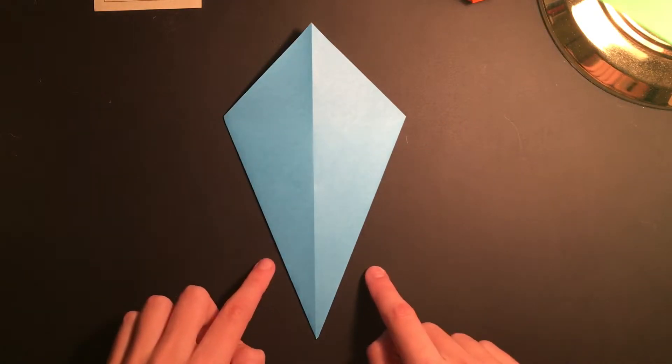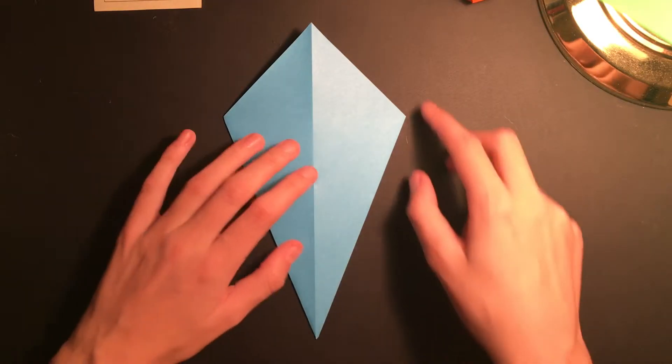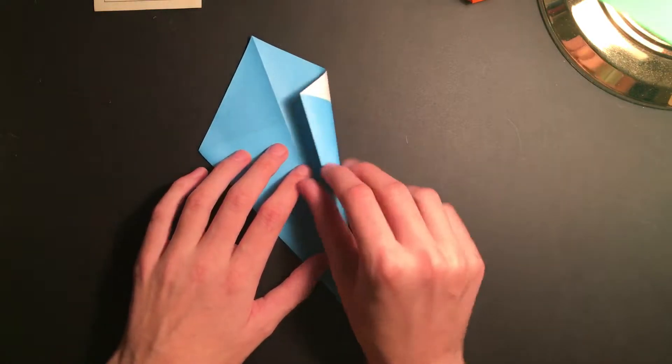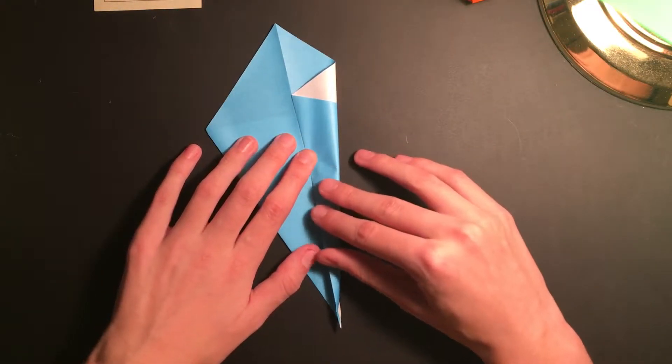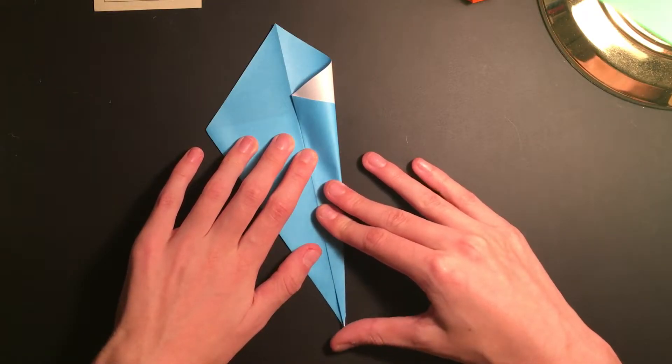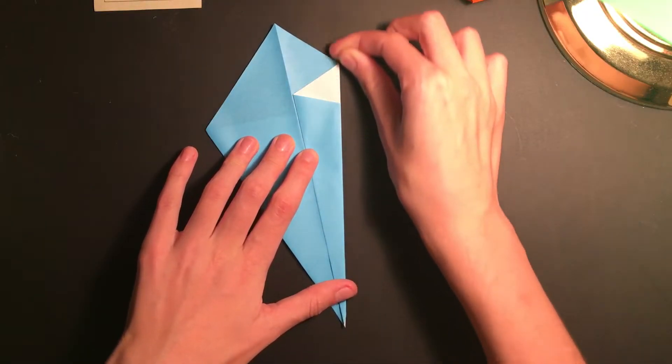Now we're going to be doing the same thing, bringing these two edges towards the center crease. And you might find that the flaps are going to lift up, but if you just hold the paper steady and firmly and crease sharply, it should not be a problem.